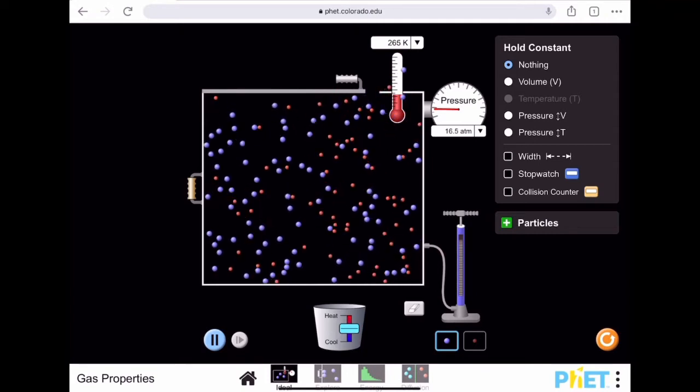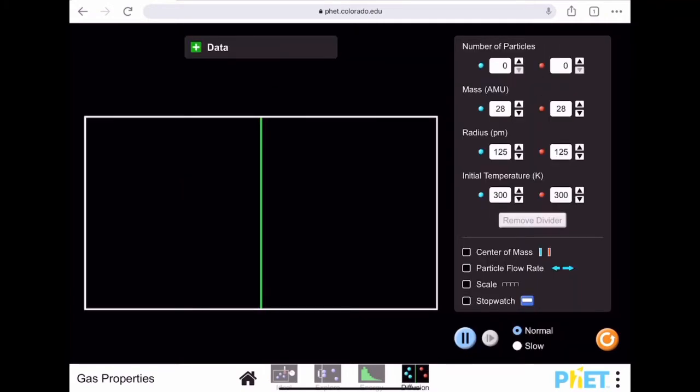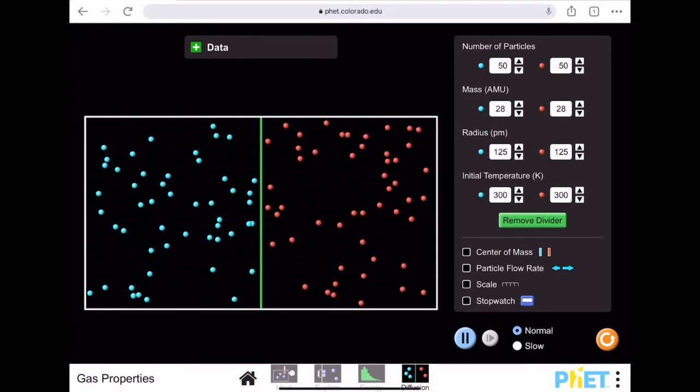Now let's look at diffusion for a minute. We're going to put particles on each side - 50 particles. With diffusion,